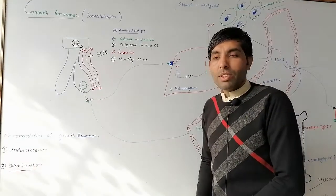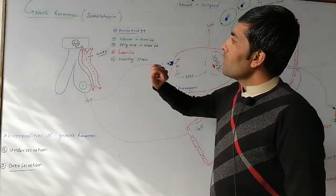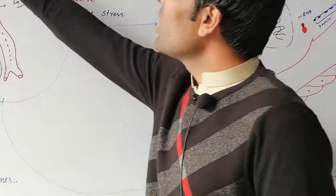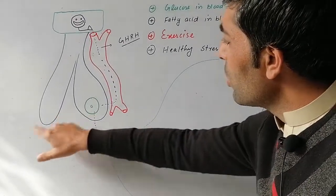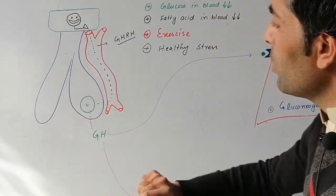Bismillah ar-Rahman ar-Rahim, as-salamu alaikum dear students. This topic takes place of the anterior pituitary gland, including anterior loops, medial loops, and posterior loops in the environment.